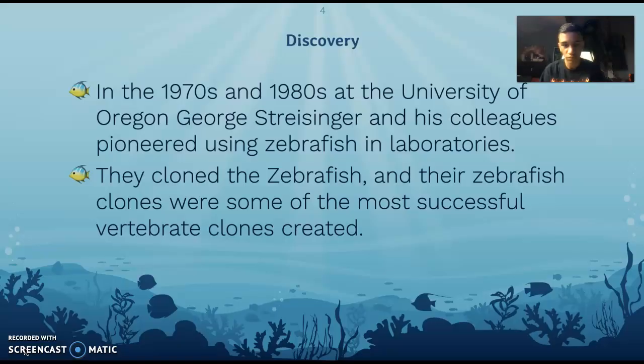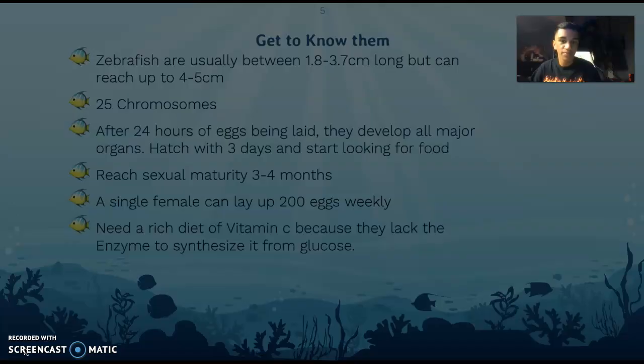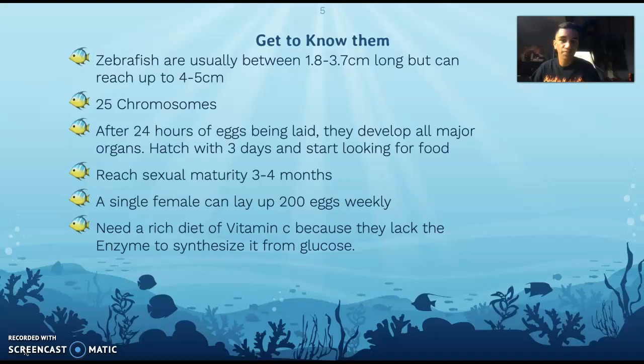So when were they discovered? In the 1970s and 80s at the University of Oregon, George Streisinger and his colleagues pioneered using the zebrafish in laboratories. They started by cloning the zebrafish, and their clones are actually some of the most successful variant clones created and still are, so they pioneered the use of zebrafish and are still recognized for it.